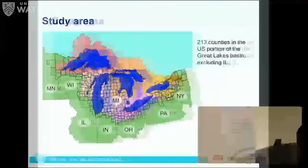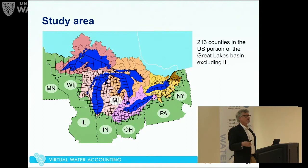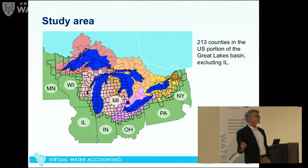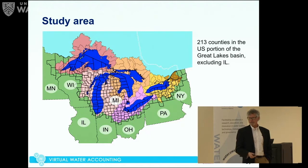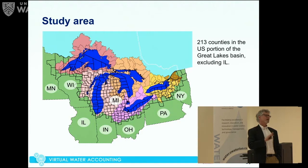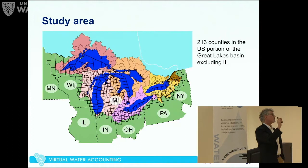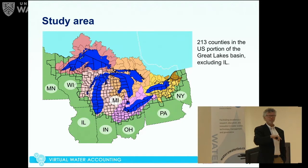This is our study area — just the US portion of the Great Lakes. I'm sorry to show another map where Canada is blank, but this is a data availability problem. We knew where to get data on the economic and water consumption portions of the work. We looked at 213 counties in the US portion of the Great Lakes basin, except Illinois — Chicago is in the basin but it's just too complicated to study.